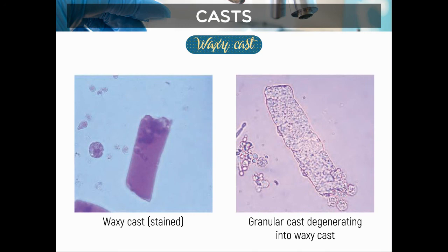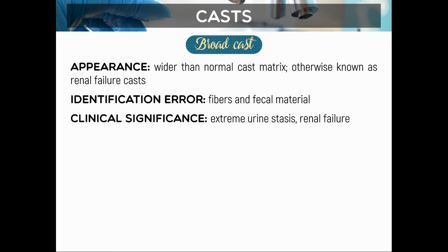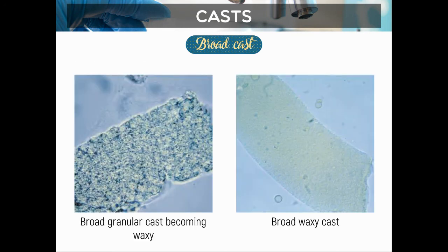The broad cast is wider than the normal cast matrix, otherwise known as the renal failure cast. The clinical significance is extreme urine stasis or renal failure — when urine stays in the tubules, the tubules enlarge, and the resulting casts are correspondingly wider. Here we can see broad waxy cast and broad granular cast examples.